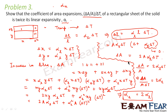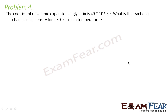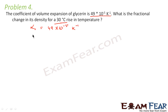I hope it is clear how we arrived at and proved the result. Now let us go ahead and look at yet another problem. The problem states: the coefficient of volume expansion of glycerin is 49 into 10 to the power minus 5 per Kelvin. What is the fractional change in its density for a 30 degree Celsius rise in temperature? The given values are alpha V equals 49 times 10 to the minus 5 per Kelvin, and delta T equals 30 degree Celsius.